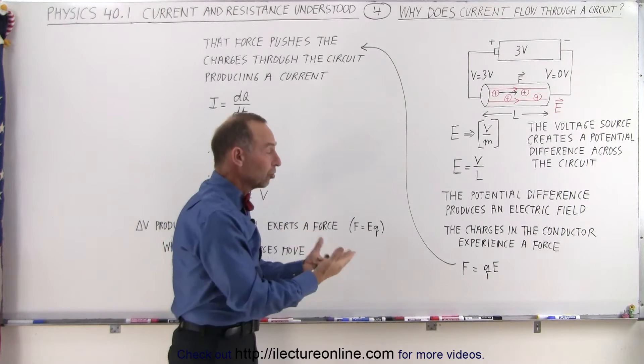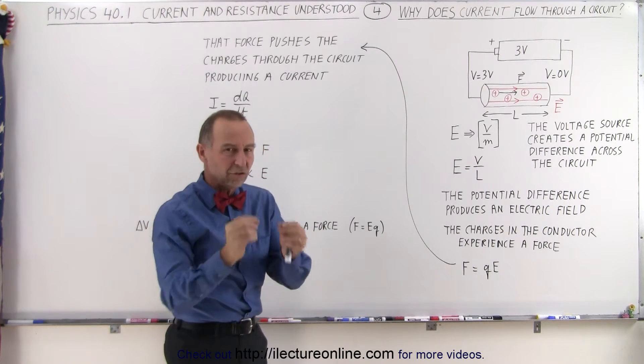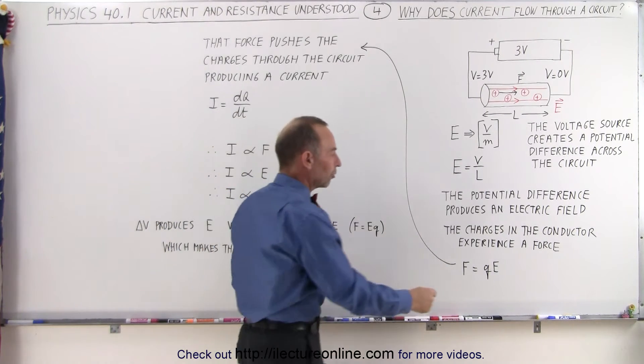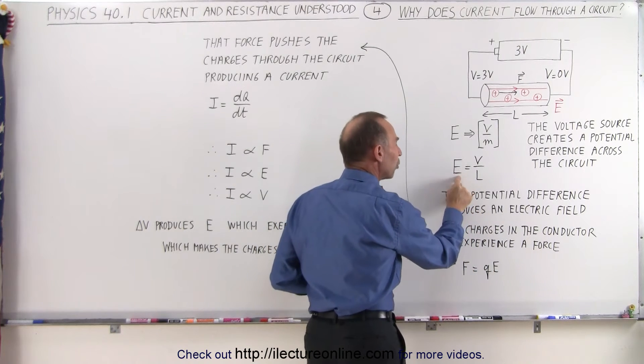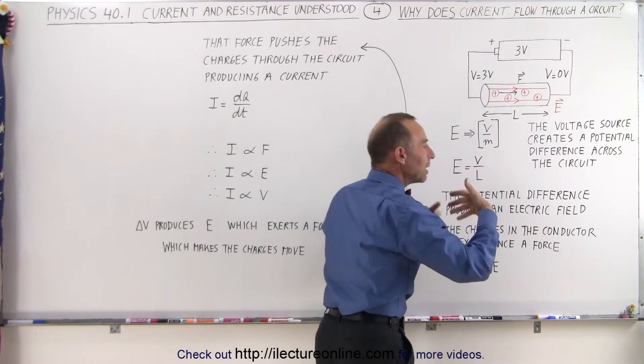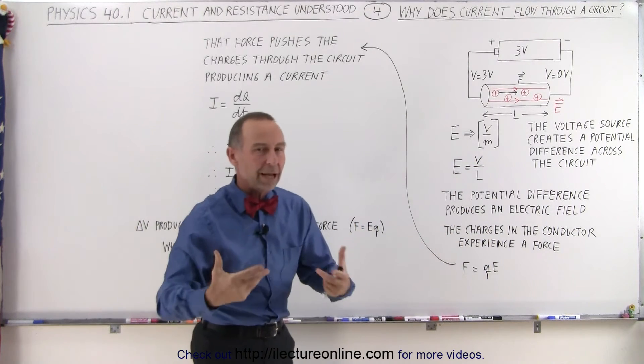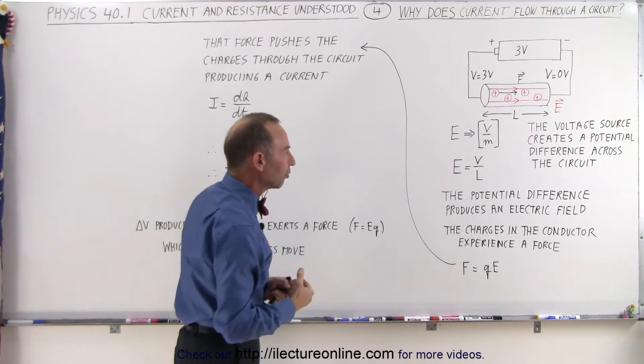Now, typically, all the charges in there are going to be electrons, singular charges. So it's simply the charge of an electron times the strength of the field. And the strength of the field is simply proportional to the strength or the amount of potential difference applied by the battery or the voltage source.